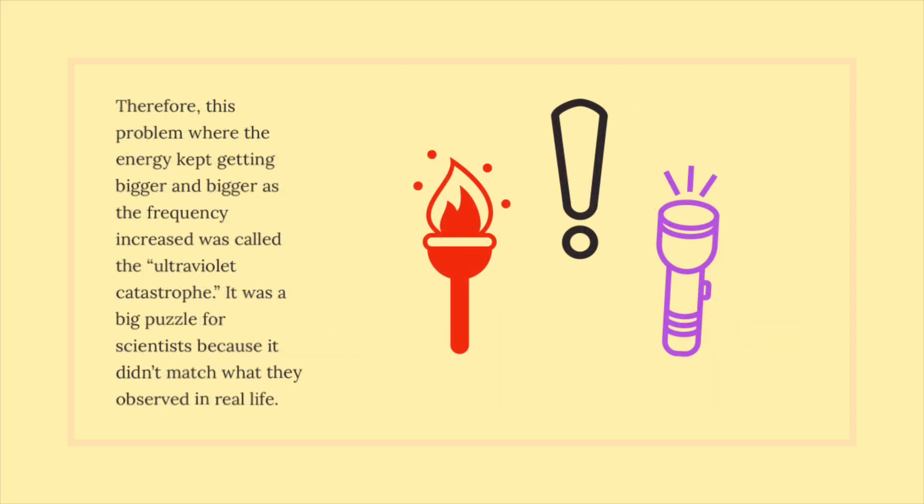Therefore, this problem where the energy kept getting bigger and bigger as the frequency increased was called the ultraviolet catastrophe. It was a big puzzle for scientists because it didn't match what they observed in real life.